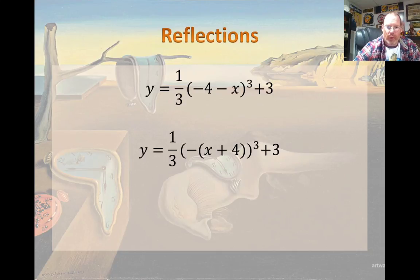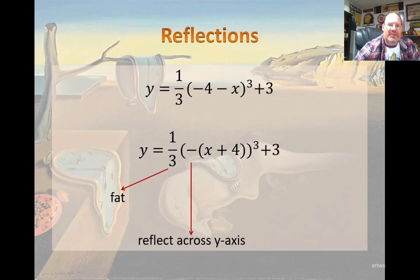There's 4 different things that we know about this graph. First of all, so there's 5. Because the first is we know it's a cube function. The 1 third tells us that it's a fat graph. The negative in the parentheses tells us that it's reflected across the y-axis. The plus 4 tells us that it moves left 4 spots. The plus 3 tells us that it's up 3 spots.